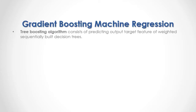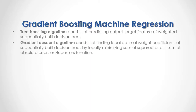Tree boosting algorithm consists of predicting the output target feature of weighted sequentially built decision trees. Gradient descent algorithm consists of finding local optimal weight coefficients of sequentially built decision trees by locally minimizing sum of squared errors, sum of absolute errors, or the Huber loss function.